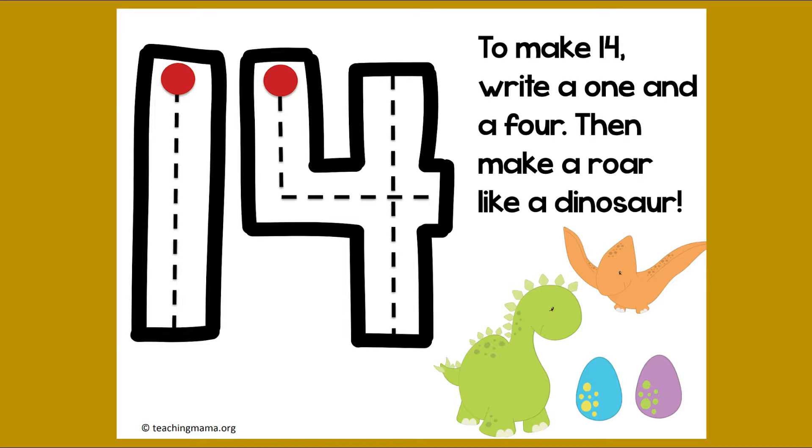How about on the carpet or the floor, boys and girls? Can you do it? A 1, straight line down, and then a 4. Down and over and down some more. Last time, and then make a roar like a dinosaur. Roar.